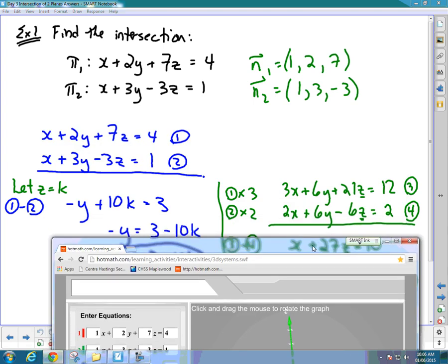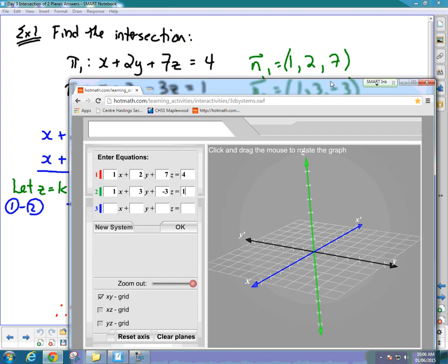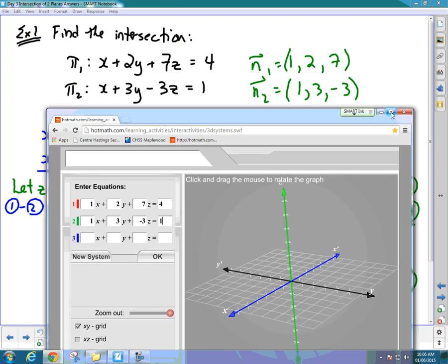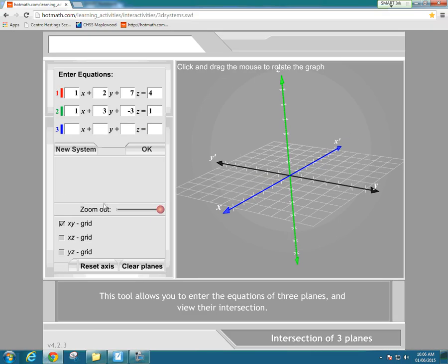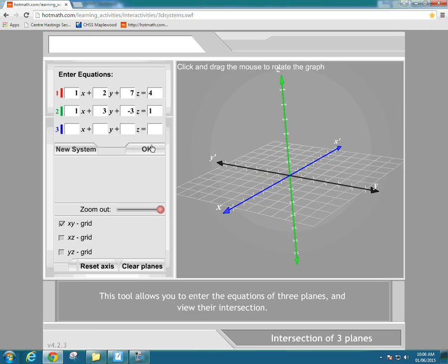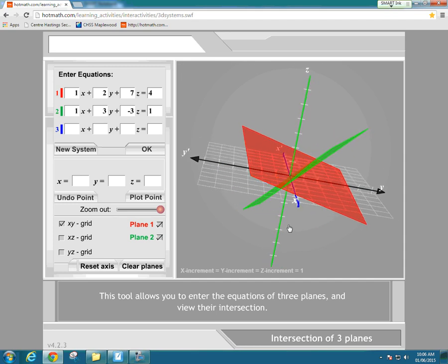We know from the math that this intersects at a line because the normals are not scalar multiples of each other. If we go here and click okay, you'll see that visualization.